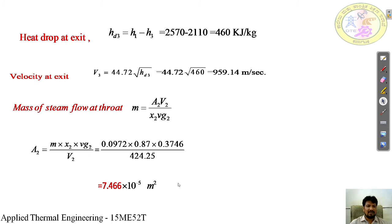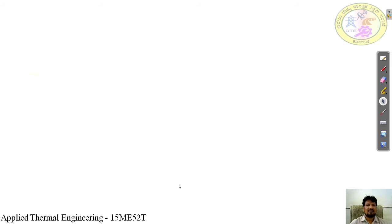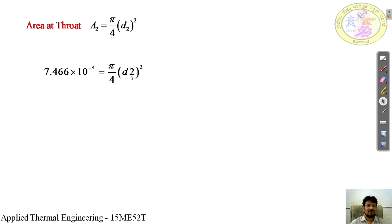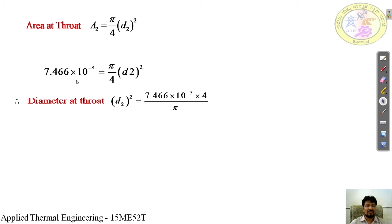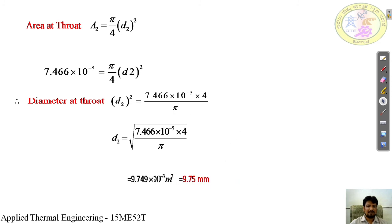Now calculate the diameter. Since area = π/4 × d², we solve for d2: d2 = √(4 × A2 / π) = √(4 × 7.466 × 10⁻⁵ / π). After calculation, d2 = 9.75 mm. So the throat diameter is 9.75 mm.